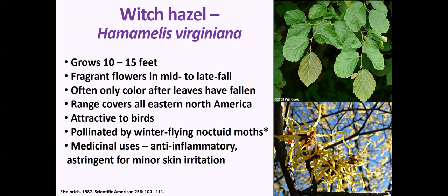Witch hazel is a tree that most people don't even know exists. It grows 10 to 15 feet high, and its range covers all of eastern North America. It has fragrant flowers in mid to late fall — when most other trees have lost their leaves, often the only color you'll see will be the witch hazel blooms. They are attractive to birds, and interestingly, they are pollinated by a winter-flying noctuid moth. Many people know witch hazel as a medicinal name — it's an anti-inflammatory astringent available at pharmacies for minor skin irritation, from the same plant.